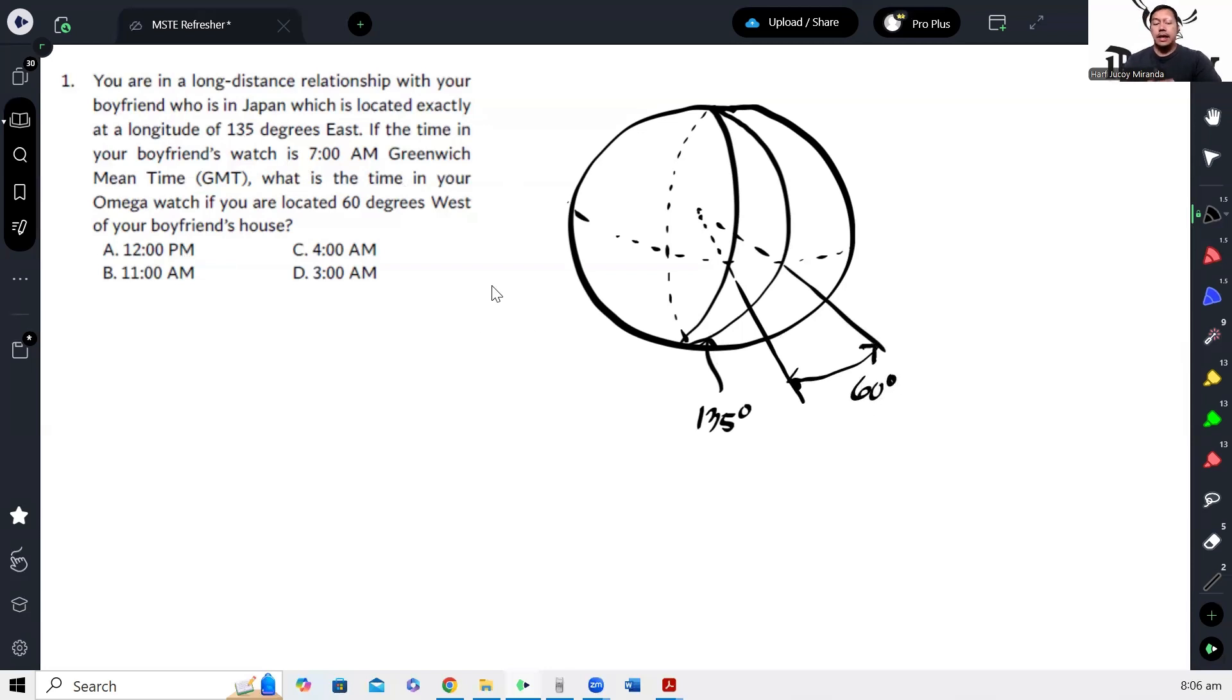Okay, so what they're asking us is what is the time here. To solve that, we just need to remember that in one day there are 24 hours, so meaning the longitude should divide the 24 hours equally. And in one complete rotation we have 360 degrees.